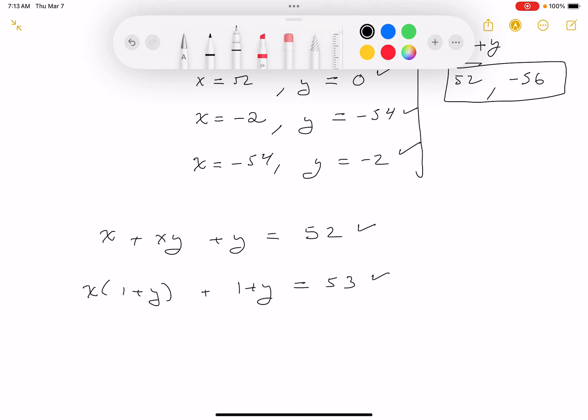Now this equation and this equation are identical. Just to show you that—this is x plus xy, sorry, xy plus 1 plus y equals 53. This is x plus xy plus y. Subtract 1 from both sides, you get 52. So it's really the same thing.